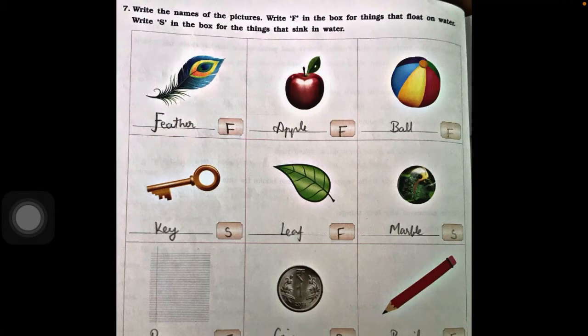If it is floating on water then you have to write letter F, and if it is sinking in water then you can write letter S. So the first is a picture of a feather — a feather can easily float on water, so you can write F.